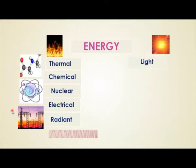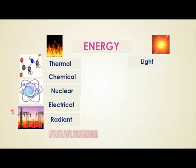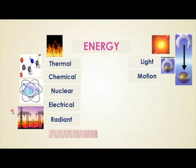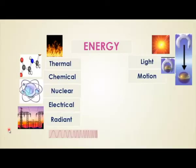Next one is light energy. Light energy is one of the sources of radiant energy, but it is visible to our eye. It is in the form of photons and it has energy that can be converted into useful energy — that is called light energy. Next one is motion energy. When a body is held in space, for example a ball held by a holder, it has potential energy. When released, that energy is converted into kinetic energy due to the motion of materials.